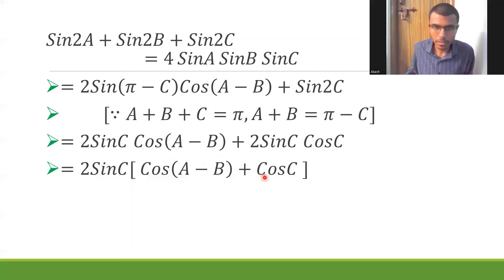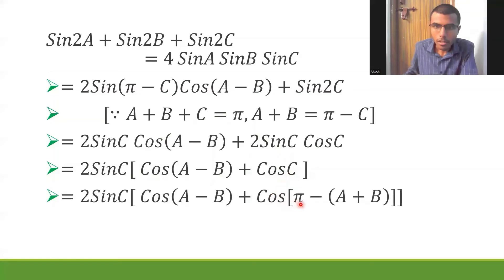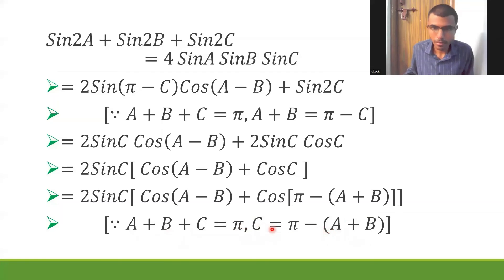Now this is of the form A - B, so I want to convert this to something like A + B. How I'm going to do it is, since A + B + C is π, C would be nothing but π - (A+B). So in place of C I'm going to write it as cos(π-(A+B)). And again, don't forget to mention the reason. You could mention it adjacent to the step or below the step, leaving a little space.